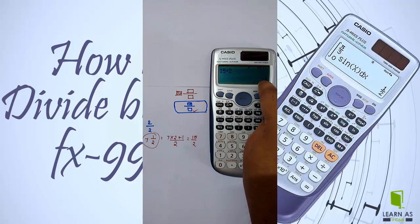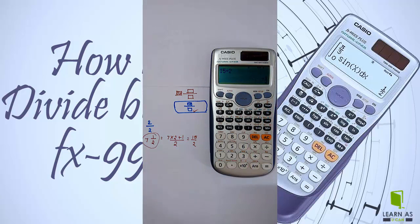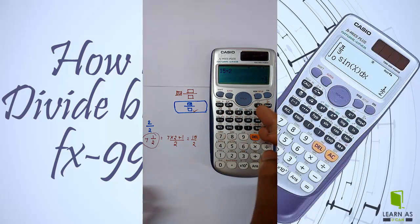You can see the result changes, which is 7 and 1 by 2 (7½). In this way you can use this button on the ES calculator. Thank you.